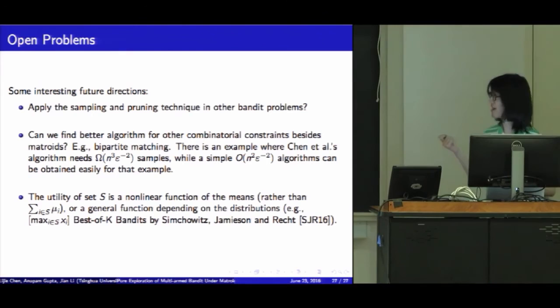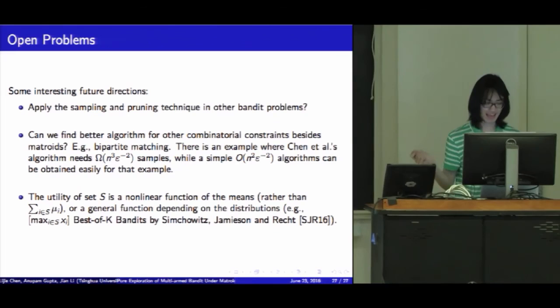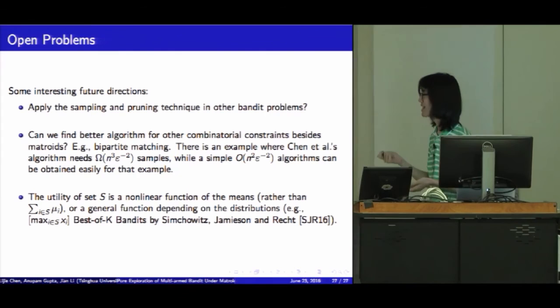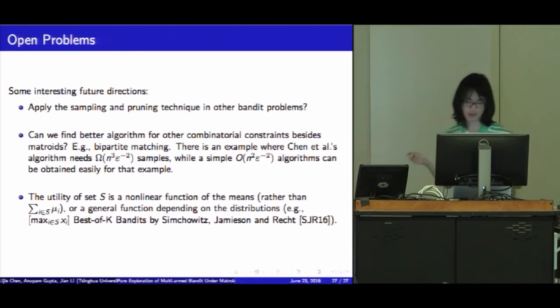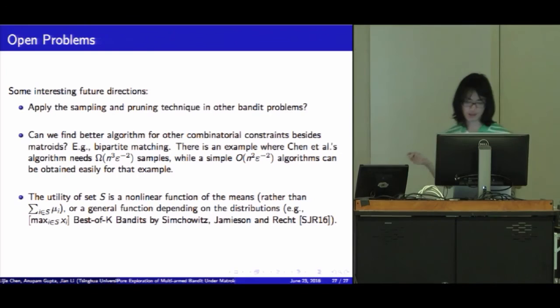There are some interesting future directions we are interested in. The first one is, of course, can we apply the sampling and pruning technique in other bandit problems? The second one is that can we find better algorithms for other combinatorial constraints besides matroid? For example, bipartite matching. We think Chen et al.'s work is optimal here. Finally, we want to consider the case where the utility of a set S is a nonlinear function of the means, or a general function depending on the distribution, for example, just as in the last talk.